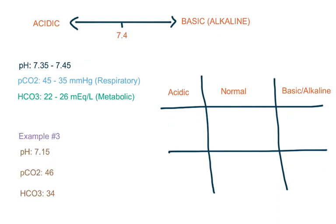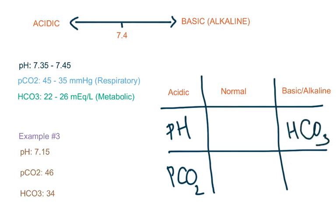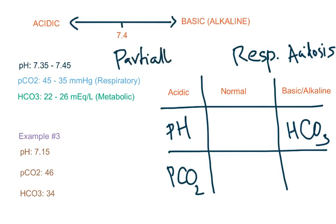Here's the third example. pH is 7.15, which is acidic. pCO2 is 46, which is more than 45, so also on the acidic side. Bicarb is 34, which is more than 26, so it is on the alkaline side. pH determines this is acidosis; carbon dioxide determines this is respiratory acidosis. Bicarb being on the alkaline side means it is trying to compensate, so this is partially compensated respiratory acidosis.